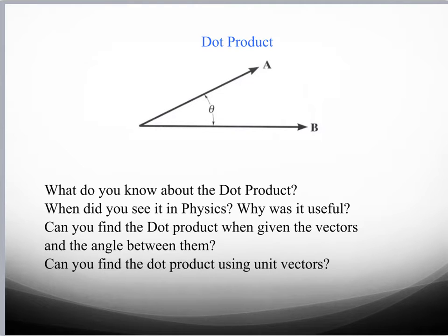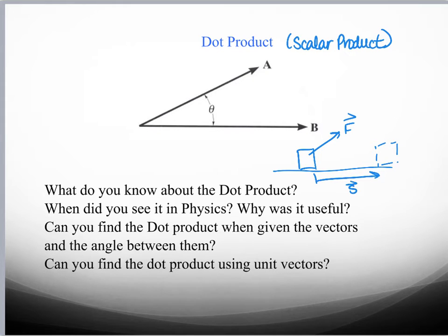We already discussed the idea that we've seen the dot product. Keep in mind it's also called the scalar product. And the way that we really remember it is when we're talking about work. If we had an object that we were moving, we exerted a force on it, and it moved along from this location to here, and this is the angle theta, we would say that the work that we did was Fs cosine theta.